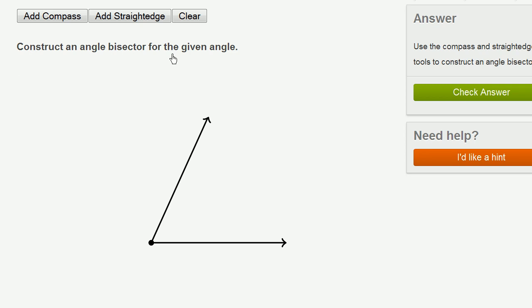We're asked to construct an angle bisector for the given angle. So this is the angle they're talking about. And they want us to make a line that goes right in between that angle, that divides that angle into two angles that have equal measure, that have half the measure of the first angle.